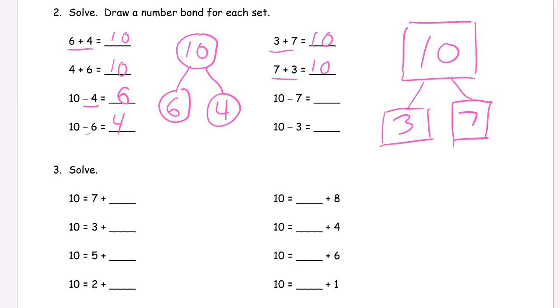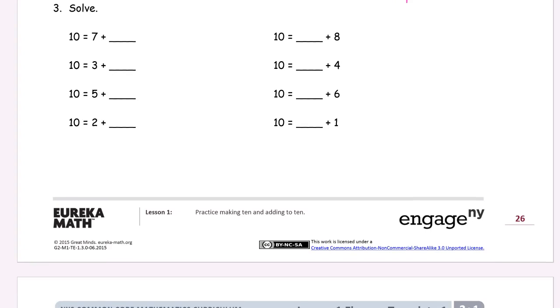Three plus seven is ten, seven plus three is ten. Ten without the seven—if I have the ten and I take away the seven, I'm going to have the other part left, which is the three. If I take away the three, then I'll have the other part left, which is the seven.